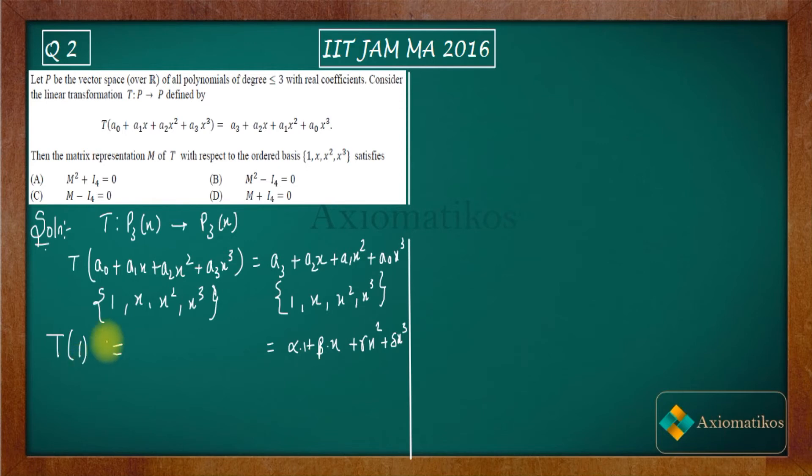So see T(1). If you have a constant then what this transformation actually maps it with is x³. In this entry here we have a₁, a₂, a₃ equal to 0 but a₀ is 1. So a₀ is 1 therefore you will get x³ and these all will be 0. So you have this x³ here. Now by comparing the coefficients we can find that α will be 0, β will be 0, γ will be 0, δ will be 1.